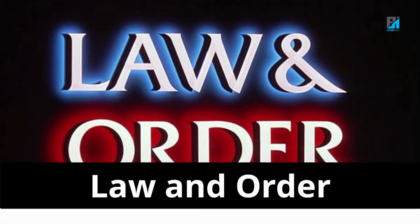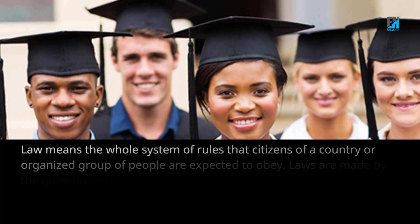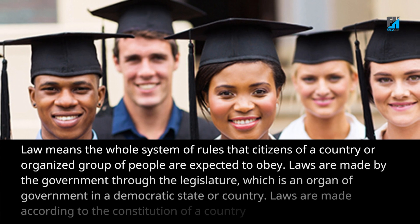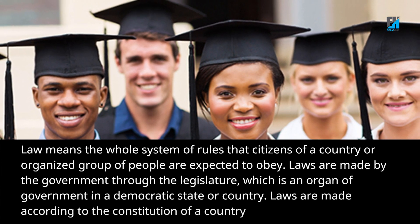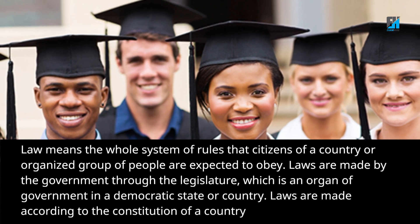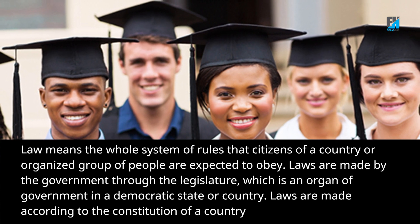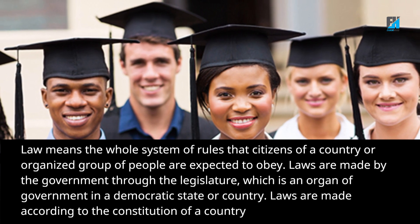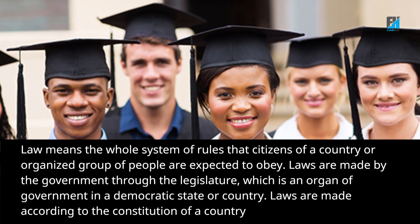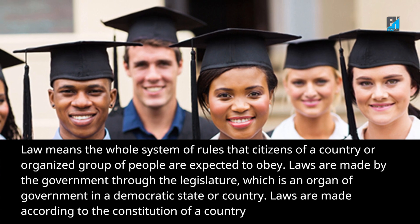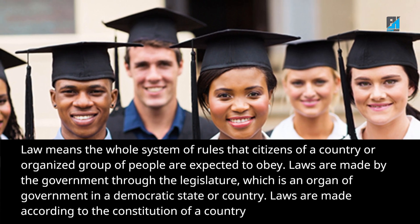In today's class we would be discussing law and order. Law means the whole system of rules that citizens of a country or organized group of people are expected to obey. Laws are made by the government through the legislature, which is an organ of government. In a democratic state or country, laws are made according to the constitution of a country.